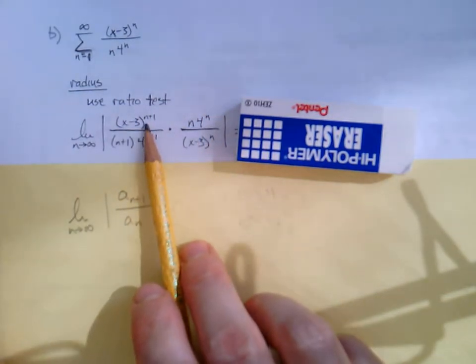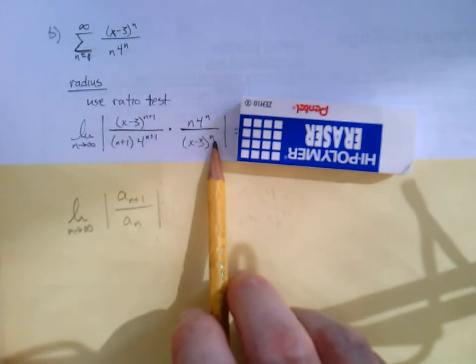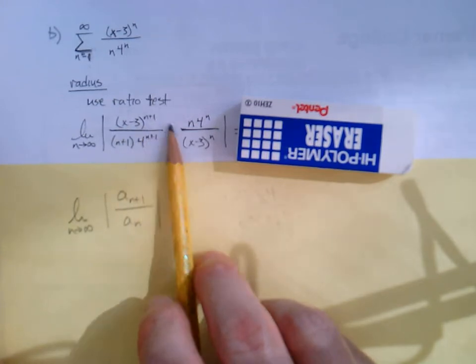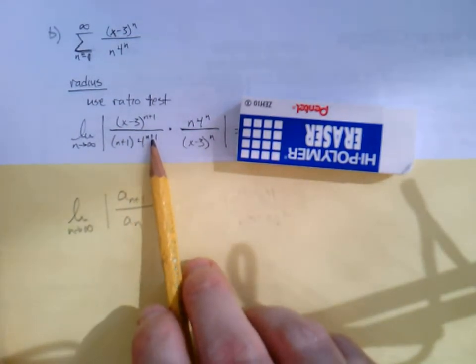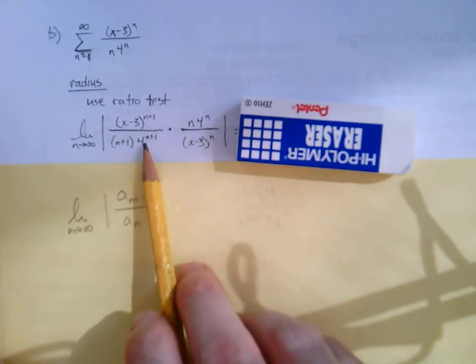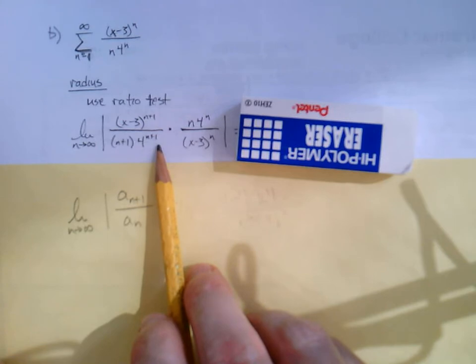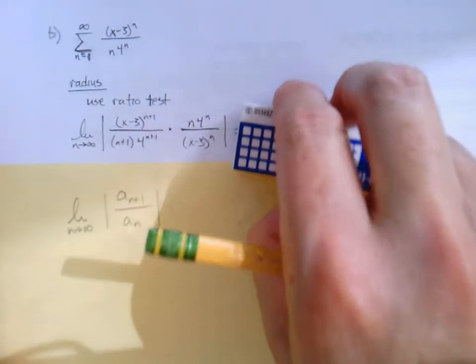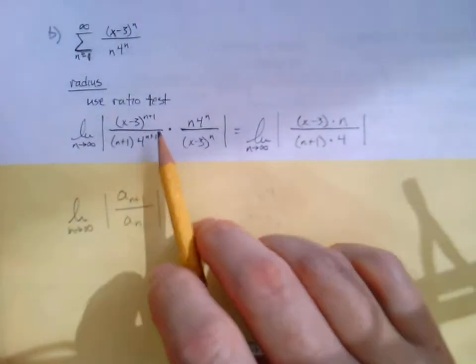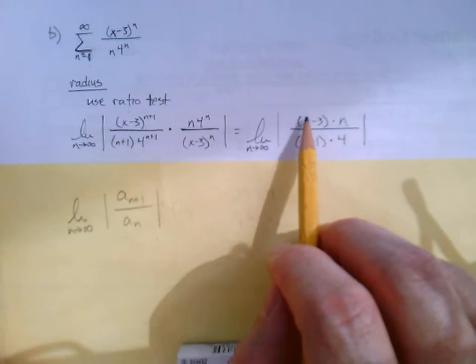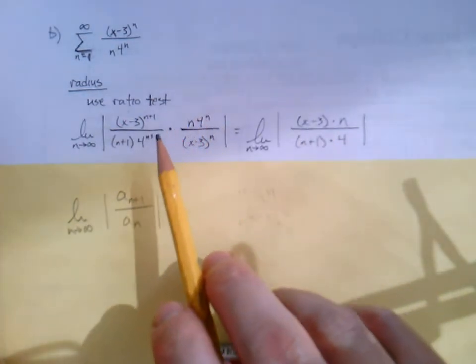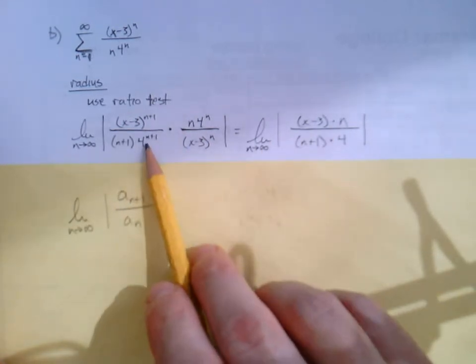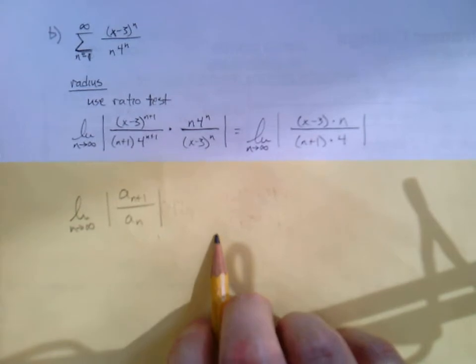Okay, so I've got x minus 3 to the n plus 1 over x minus 3 to the n. All that's going to cancel except for one of the x minus 3s to the first here. And 4 to the n plus 1, 4 to the n. Well, that's going to cancel with 4 to the n here, leaving us with just 4 to the first. The n and the n plus 1 we can't do anything with. So here's what we have.